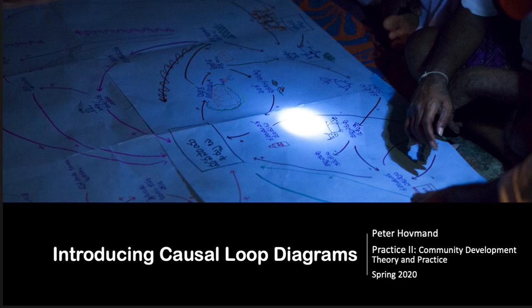I'm going to be introducing causal loop diagrams. In system dynamics, we use informal maps and formal models of computer simulation to understand endogenous sources of system behavior. By endogenous, we generally mean the feedback loops that are generating the behavior.